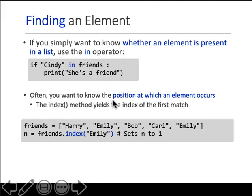Often you want to know the position at which an element occurs. You can find the index of that member. You say friends which is the list name dot index, give the list member, and it will say 0, 1, 1 is Emily, so Emily 1 goes in n. This is highly unlikely in our class, but just showing you that it exists out there.